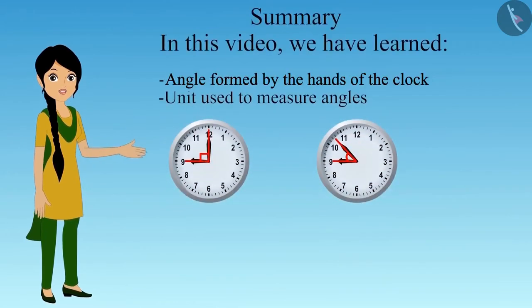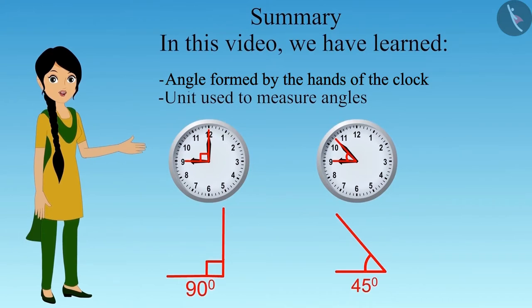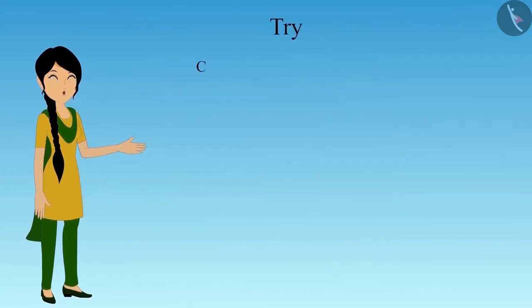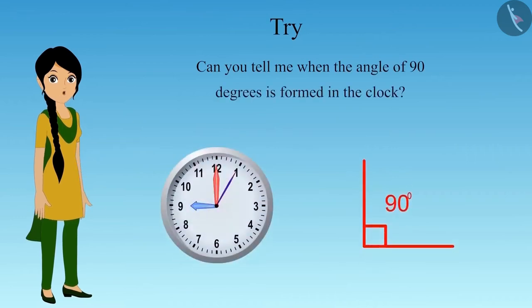In this video, we have learnt about the angles formed by the hands of the clock and the unit used to measure angles, that is degree. Can you tell me when the angle of ninety degrees is formed in the clock? Think for a while. We will discuss this in detail in the next video. In the next video, we will see some interesting examples of angles formed in the clock. Thank you.